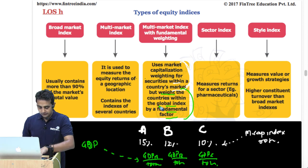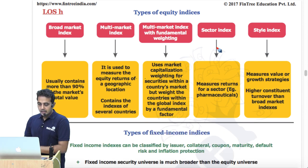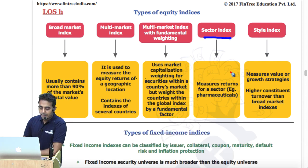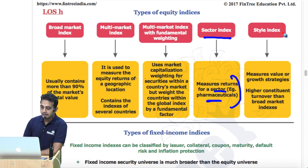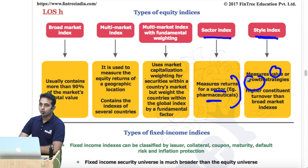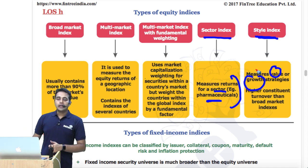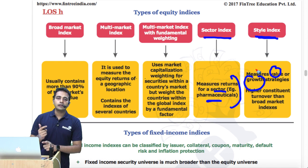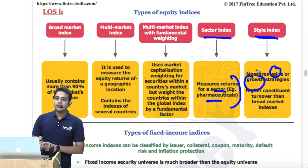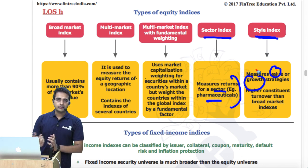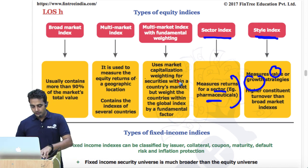Sector index measures the return of a particular sector, for example pharmaceuticals. Style index is either value or growth. Some value stock characteristics: low price-to-earnings, low price-to-book value, high dividend yield, and low debt on the balance sheet — these are characteristics of value stocks.